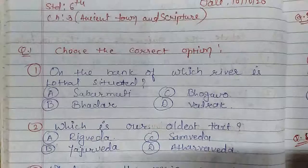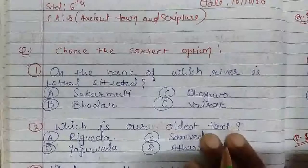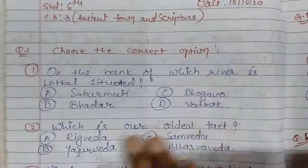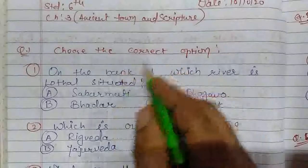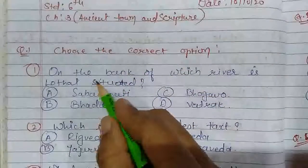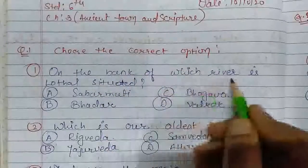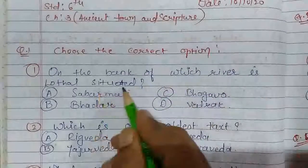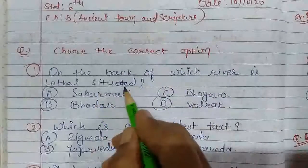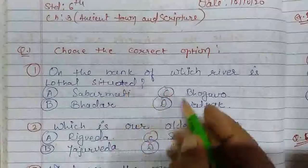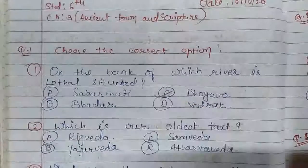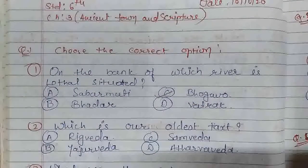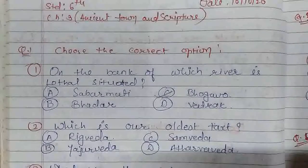Let's start our new lesson. Lesson number 3. First, choose the correct option. On the bank of which river is Lothal situated? Lothal kawansi river ki paas hai? That is Bagao. It's situated on the Bagao river in Dhulka Taluka.